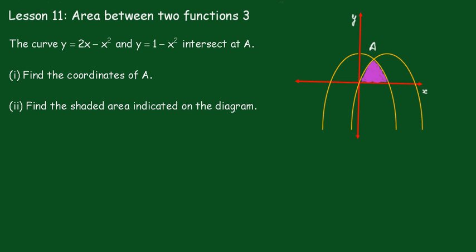Lesson 11, area between two functions, number 3. We have the curve y equals 2x minus x squared, and y equals 1 minus x squared.